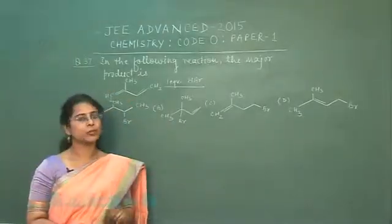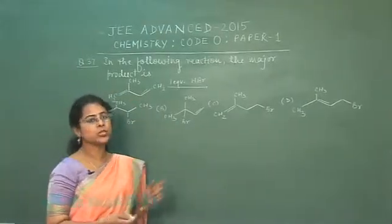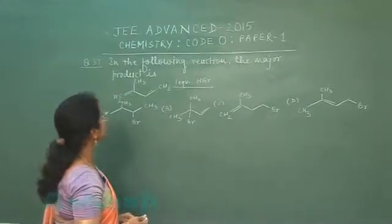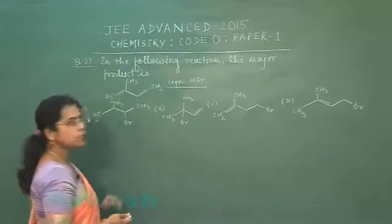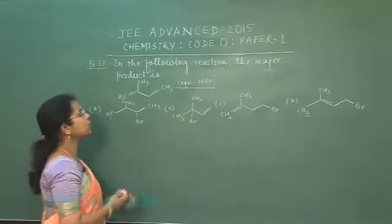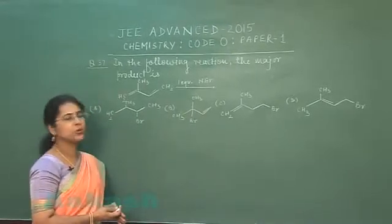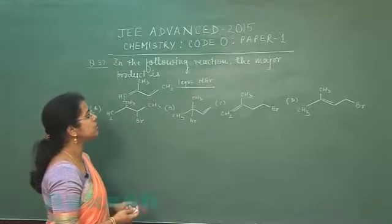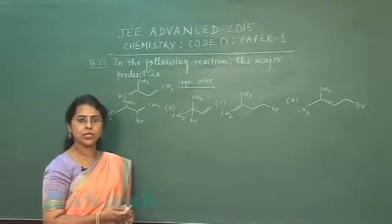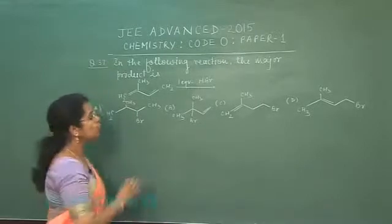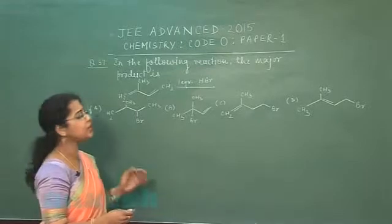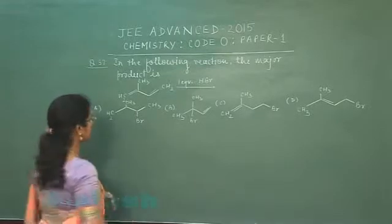Next question is question number 37. In the following reaction, the major product is to be found. The structure of an organic compound is given and the condition mentioned is one equivalent HBr. Four options are given and we have to find the correct option.